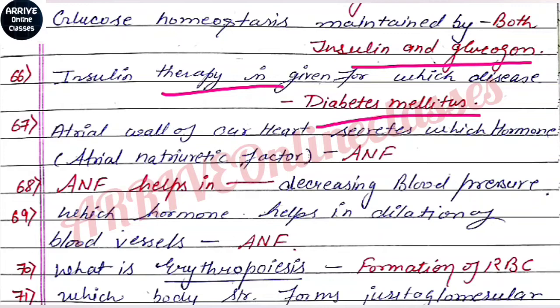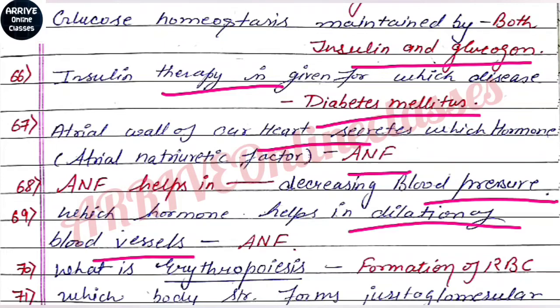The atrial wall of our heart secretes ANF (Atrial Natriuretic Factor). ANF helps in the dilation of blood vessels, which causes blood pressure to decrease. So ANF's main role is in lowering blood pressure.